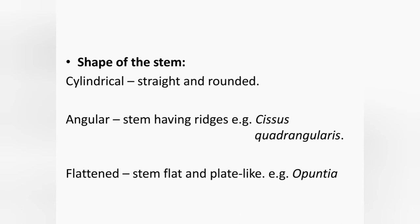According to the shape of the stem, there are different types: cylindrical, angular and flattened. Cylindrical means a straight and rounded shape of stem. Angular means stems having ridges; for example, Cissus quadrangularis. Flattened means a stem with flat and plate-like structures. Example: Opuntia.